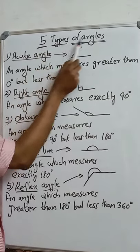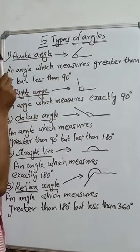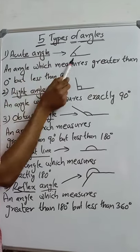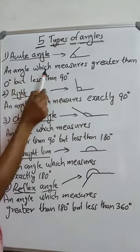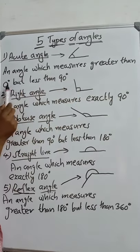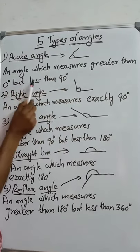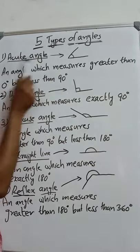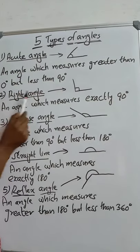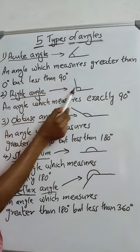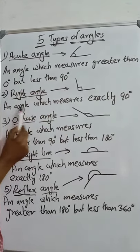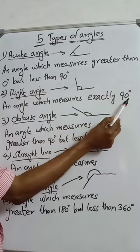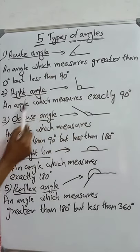Five types of angles. Number one: acute angle — an angle which measures greater than zero degrees but less than 90 degrees is called an acute angle. Number two: right angle — an angle which measures exactly 90 degrees is called a right angle.